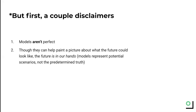A final disclaimer is that as available information changes and we learn new things, the models that organizations like COVID Act Now are building can change too. An analogy that someone on our team uses that I like is that a model's output is like a car's headlight beam while driving at night. If you see an obstruction ahead, you don't have to crash into it — you can brake, you can swerve left or right to change the path the car is on. Similarly, as new information comes in, we course correct our model.